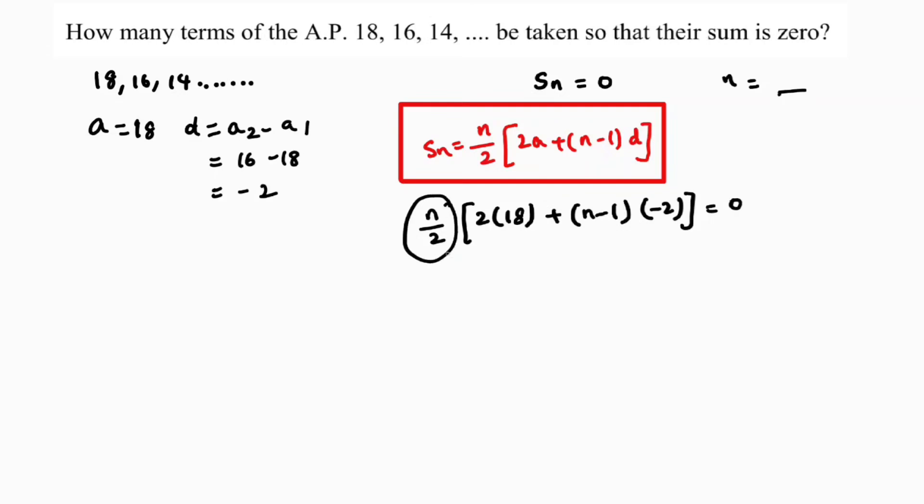If this N by 2, if I send to the other side, it will become 0. 2 times 18 is 36 minus 2N, minus into minus plus 2 equals 0.